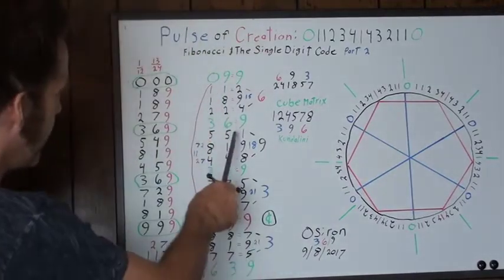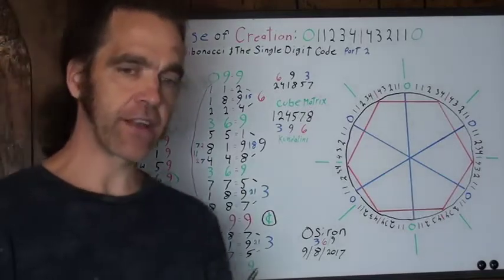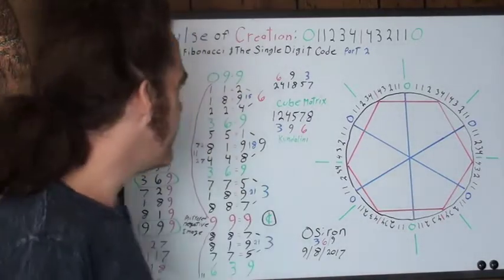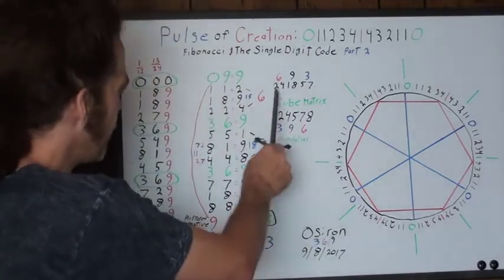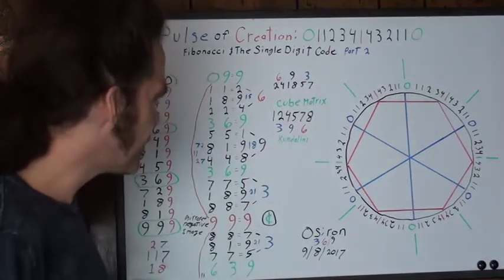Well, what happens on both halves of this is it reveals that cube matrix numbers, too, but it puts them in a little bit different of an order. It puts them in two, four, one, eight, and then five, seven. And it's separating them.